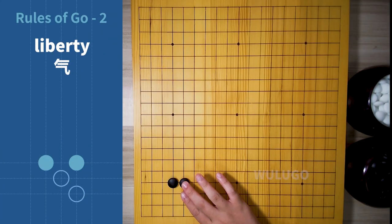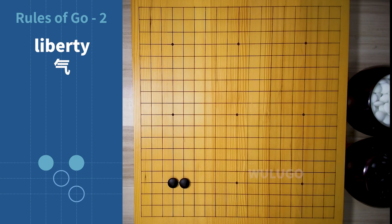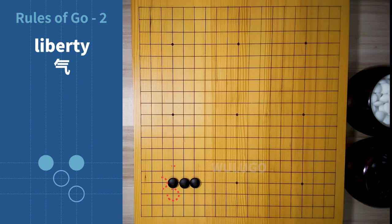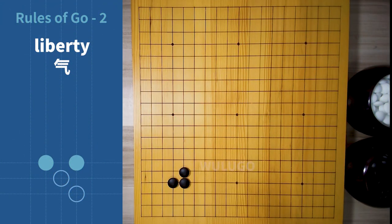If more than two stones are connected together, then the liberties of those stones can be shared. For example, at this point two stones have six liberties. Three black stones have eight liberties. And if you play the stone like this, you only have seven liberties.